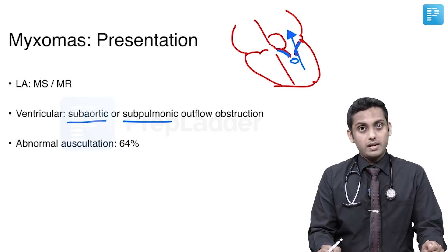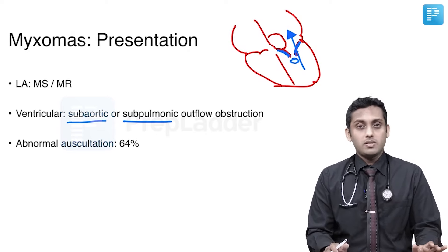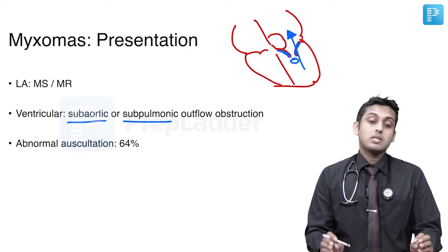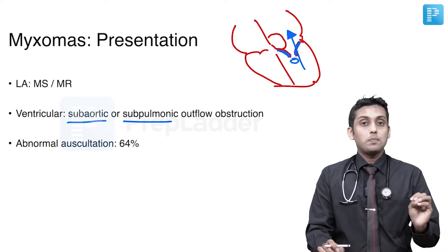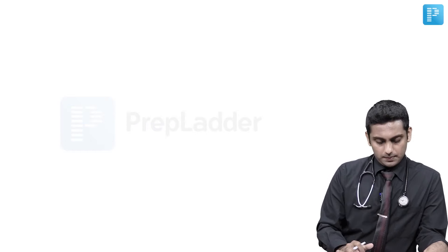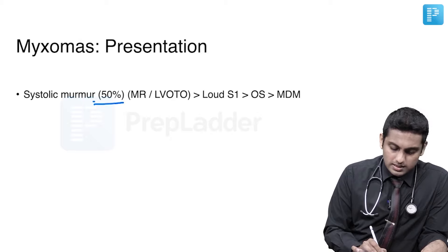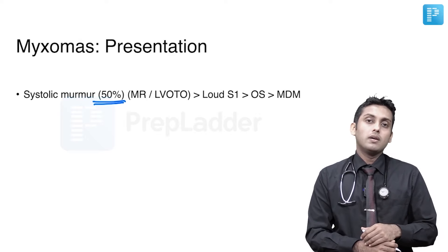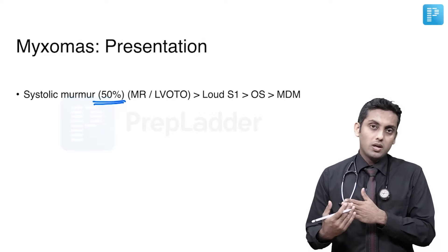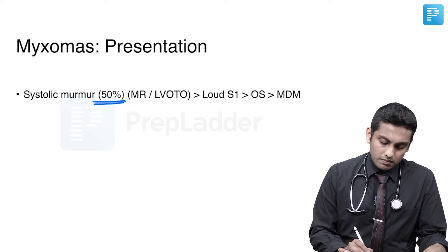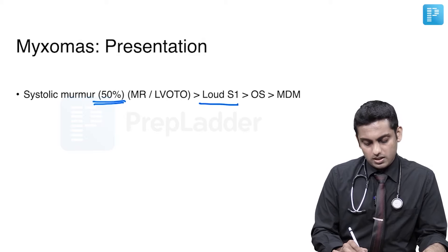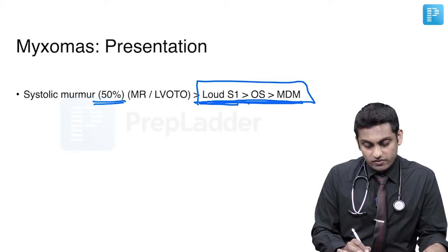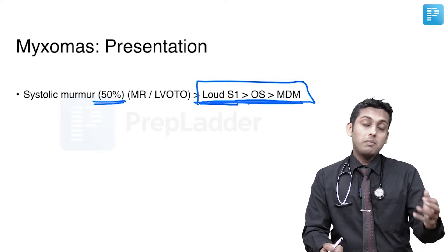On careful auscultation, two-thirds of patients can have some auscultatory finding. Although many patients are asymptomatic or symptomatic only by dyspnea on exertion, up to two-thirds can actually be detected on careful auscultation. Fifty percent of patients can have a systolic murmur, either due to mitral regurgitation or a left ventricular outflow tract murmur if there is obstruction to blood flow across the LVOT into the aortic valve. Less often, there can be a loud S1 similar to mitral stenosis, an opening snap, and a mid-diastolic murmur.